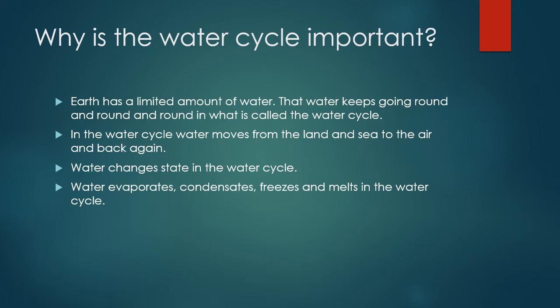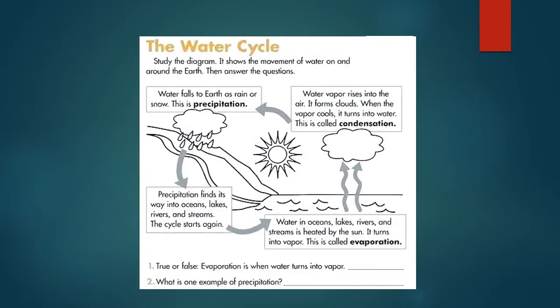Water evaporates, condensates, freezes and melts in the water cycle. If you watch the next video, you will have a better understanding of the water cycle. If we look at the diagram below, you will see the movement of water on and around Earth.